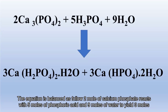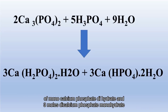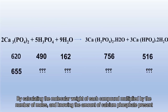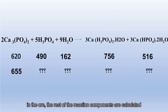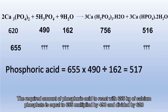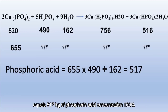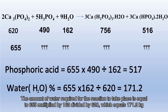The reaction between phosphate rock and phosphoric acid produces monocalcium phosphate dihydrate and dicalcium phosphate monohydrate. The balanced equation is: 2 moles of calcium phosphate react with 5 moles of phosphoric acid and 9 moles of water to yield 3 moles of monocalcium phosphate dihydrate and 3 moles of dicalcium phosphate monohydrate. The required amount of phosphoric acid to react with 655 kg of calcium phosphate equals 655 × 490 ÷ 620 = 517 kilograms at 100% concentration. The amount of water required equals 655 × 162 ÷ 620 = 171.2 kilograms.